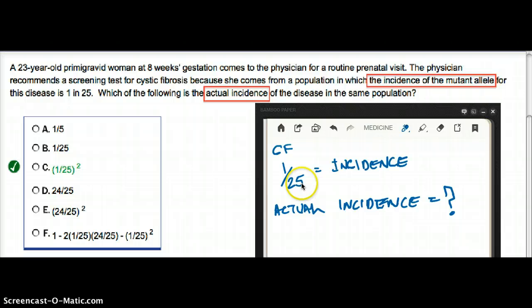The incidence of the allele is 1 in 25. The question is asking which of the following is the actual incidence of the disease. You can get confused with both incidences. If they gave us incidence, why do we have to find incidence? But there is a difference. The first incidence is of the mutant allele. The second incidence is the actual incidence of disease.